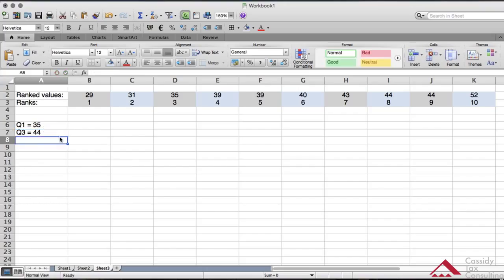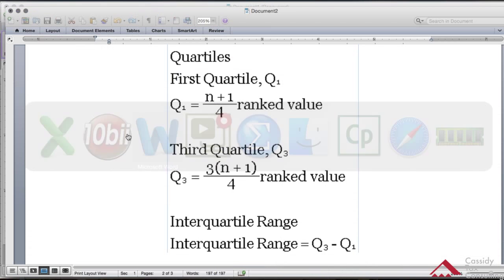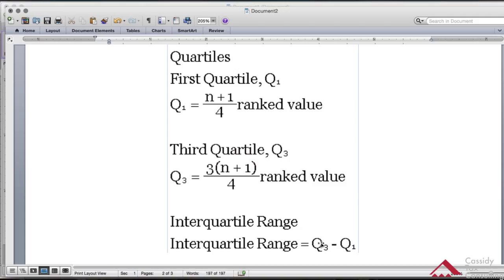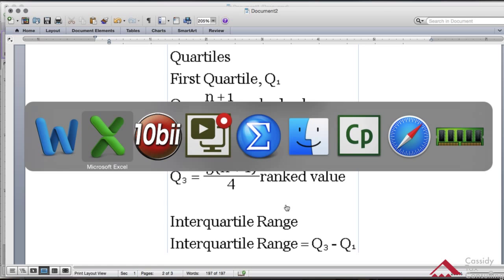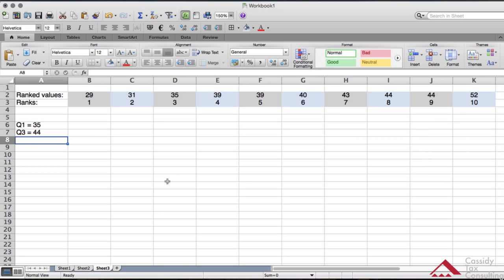So that's how we got that. Now I'm going to show you how to get the interquartile range, which, as you can see here, is the third quartile minus the first quartile.